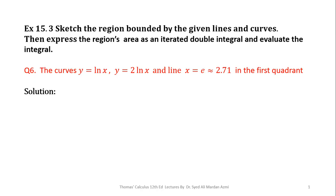Then express the region's area as an iterated double integral and evaluate the integral. In question number 6, the curves given to us are y is equal to natural log of x, y is equal to 2 natural log of x, and the line x is equal to e, where e is the exponential function whose value is approximately equal to 2.71. Our required region of integration will be in the first quadrant.